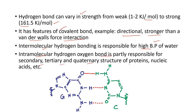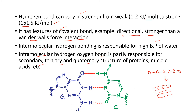Intramolecular hydrogen bonding (N–H···O and similar) is partially responsible for the secondary, tertiary, and quaternary structure of proteins, nucleic acids, etc. Proteins are chains of amino acids joined by peptide bonds. In proteins we see formation of secondary, tertiary, and quaternary structure — the polypeptide chain folds, and these hydrogen bonds hold the protein chain in a three-dimensional structure. Quaternary structure involves additional subunits forming bonds between the chains.